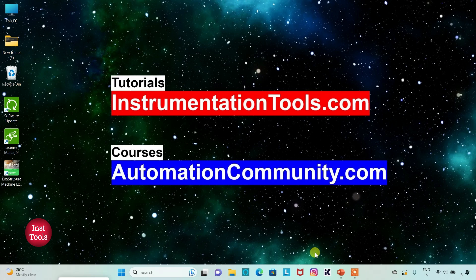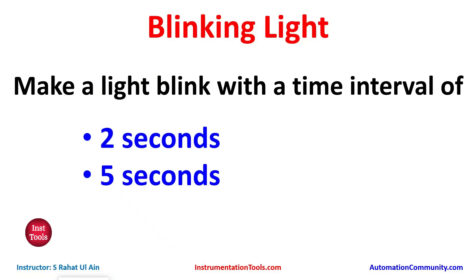Hello friends, welcome to Automation Community. Today in this video we are going to discuss an example where we will use timers. We will make a light blink with a time interval. The example is: make a light blink with a time interval of two seconds and five seconds. We will use a normally open contact for the start button, some memory bits, and timers like TP and TON.